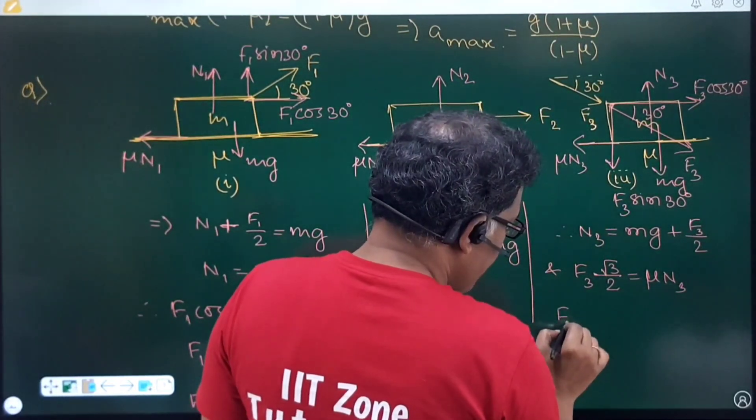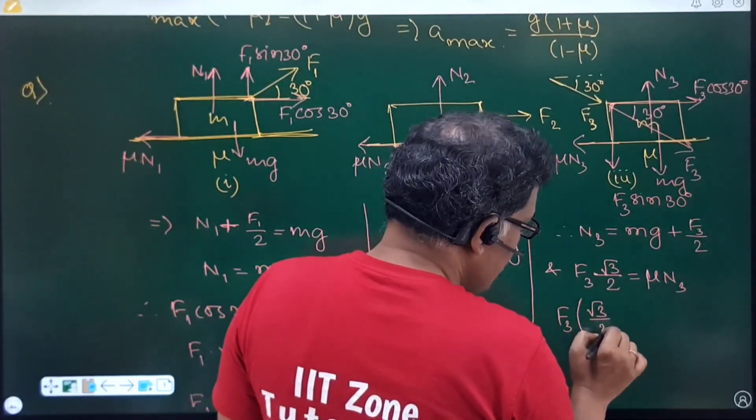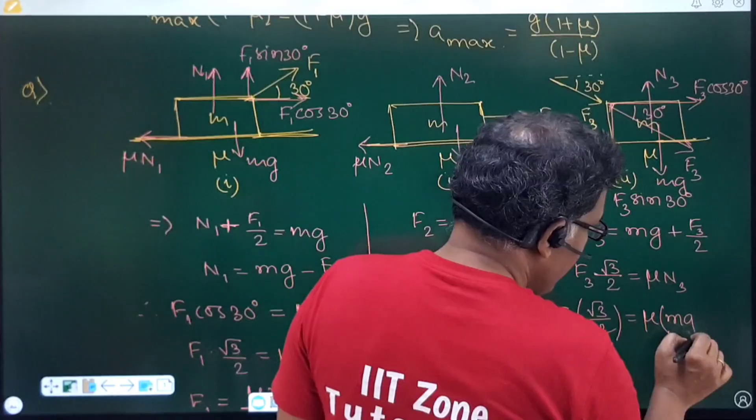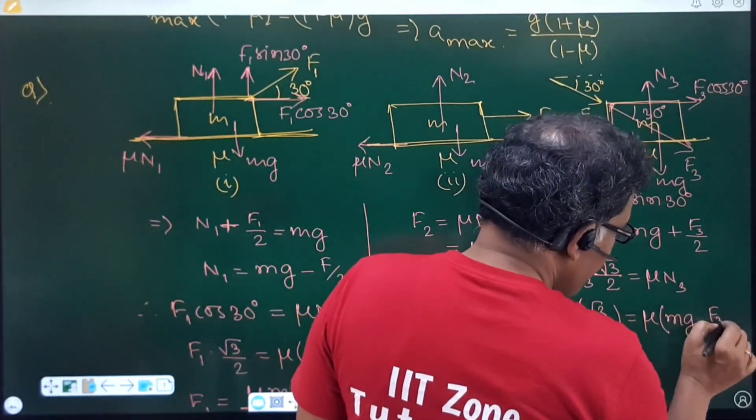So, I can write down first of all N3 that is equal to Mg plus F3 by 2 because sin 30 is half. And second equation I can write down F3 cos 30 that is F3 into root 3 by 2 that should be equal to mu N3. Friction force here will be mu into N3. So, therefore, F3 into root 3 by 2 that is equal to mu N3 instead of N3. So, I can write down Mg minus F3 by 2.